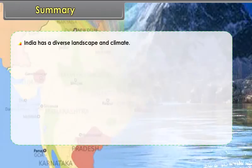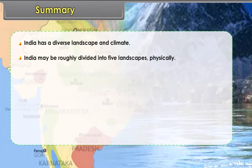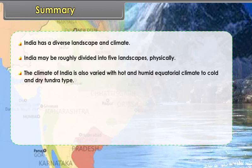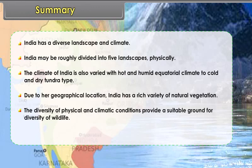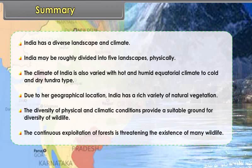India has a diverse landscape and climate, and may be roughly divided into five physical landscapes. The climate of India is varied, ranging from hot and humid equatorial climate to cold and dry tundra type. Due to her geographical location, India has a rich variety of natural vegetation. The diversity of physical and climatic conditions provides a suitable ground for diversity of wildlife. The continuous exploitation of forests is threatening the existence of many wildlife species.